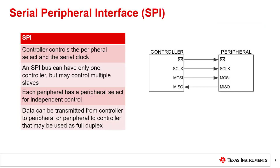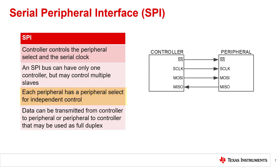The most common serial interface used in precision data converters is a standard known as Serial Peripheral Interface, abbreviated as SPI. There are two control lines for SPI. The controller, usually a microcontroller or DSP, controls the peripheral select and the serial clock used for data synchronization. An SPI bus can control multiple peripherals, but there can only be one controller. Each peripheral requires its own peripheral select line. Additionally, there are two data lines: one sends data from the controller to the peripheral, and another sends data from the peripheral to the controller. The data transmission may be full duplex, meaning data can be transmitted in both directions simultaneously.